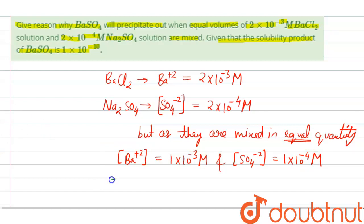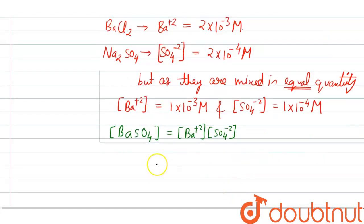That's why the ionic product of barium sulfate will be the product of barium ion concentration and sulfate ion concentration. So, the result will be 1×10⁻⁷ on multiplying these two values.